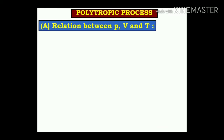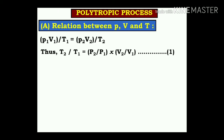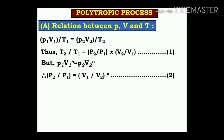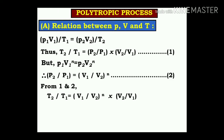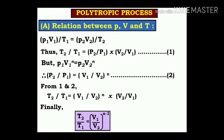For the polytropic process, the first relation is between P, V, and T. From the ideal gas law: P1V1/T1 = P2V2/T2, which gives T2/T1 = (P2/P1) × (V2/V1) — equation 1. According to the polytropic process, P1V1^n = P2V2^n, which gives P2/P1 = (V1/V2)^n — equation 2. Substituting equation 2 into equation 1: T2/T1 = (V1/V2)^(n−1).